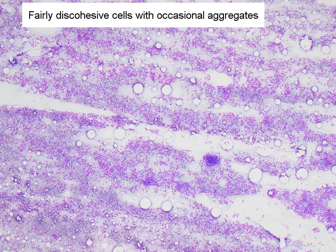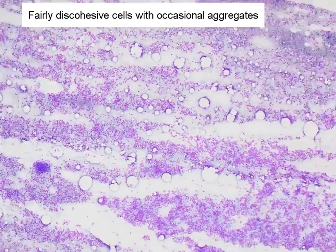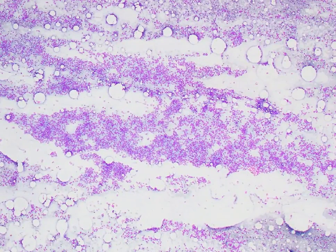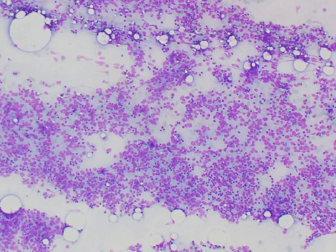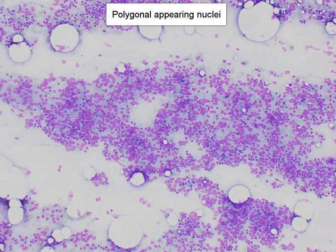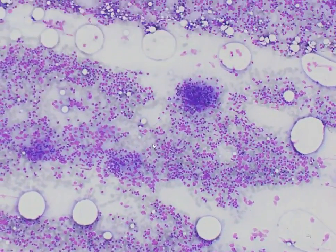At low power, we can see that this is a highly, highly cellular smear. Many of the cells actually appear fairly dispersed, although there is a suggestion of some tighter tissue fragments here. Moving around, we can again see this fairly dispersed look with several areas that appear to be a little bit more aggregated. Many of the cells have this polygonal nuclear shape, and we appreciate that they are bigger than resting lymphocytes.